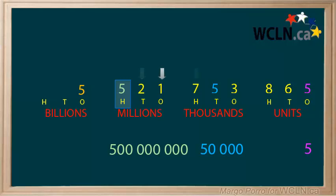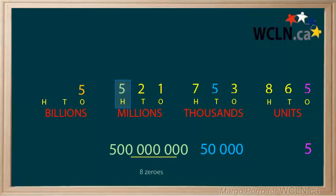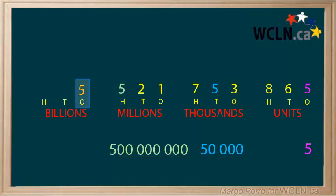One, two, three, four, five, six, seven, eight. So if you have to give its value, write down the five and add eight zeros. The last five is in the one billions place. It is worth five billion.